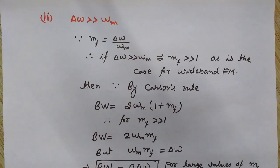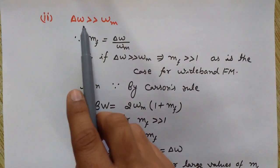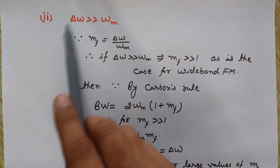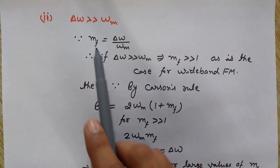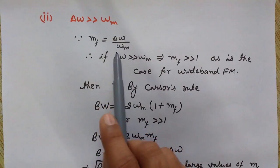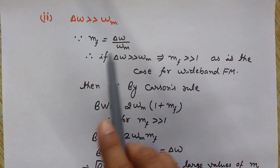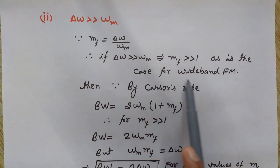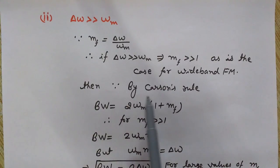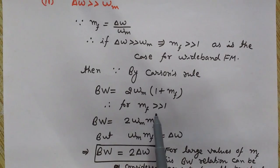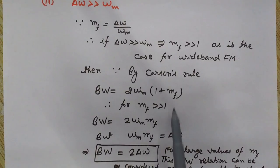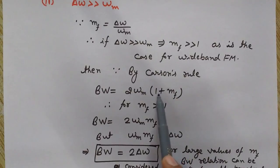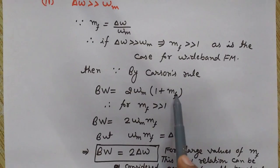Now the second case: when ΔΩ is much greater than ΩM. Since MF = ΔΩ / ΩM and ΔΩ is much greater than ΩM, we get MF much greater than one — this is the case for wideband FM. By Carson's rule, Bandwidth = 2 × ΩM × (1 + MF). For MF much greater than one, the bandwidth becomes approximately 2 × ΩM × MF, since we can write (1 + MF) as just MF.